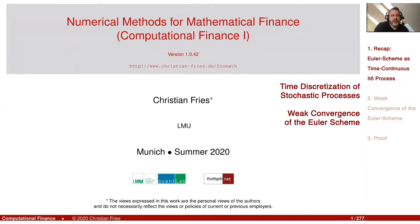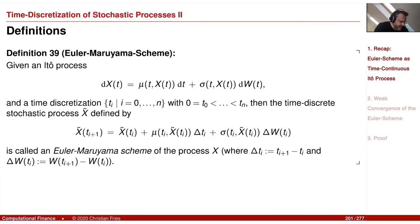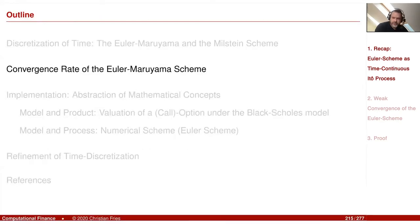Now I'd like to prove the weak convergence of the Euler scheme using Itô's lemma and the Feynman-Kac theorem. We discussed time discretization of stochastic processes, and here you see again the Euler scheme — that was the definition we had at the beginning of the section on time discretizations. If you have dx = μ dt + σ dw, then the Euler scheme gives you a sequence of random variables at different discretization times t_i.